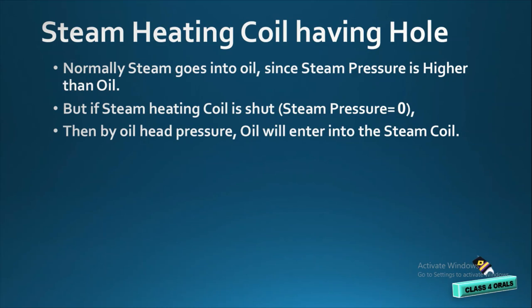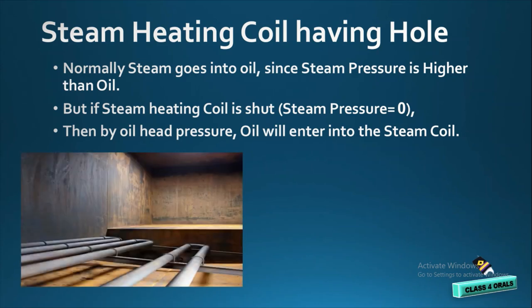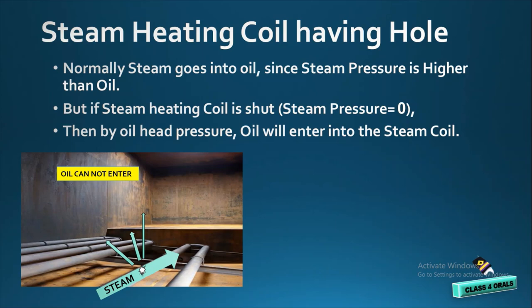One of the reasons of oil getting into the hot well is the steam heating coil having a hole. Let us suppose this is the steam heating coil and it is having a hole in it. Now, the steam pressure is higher than the oil pressure. Because of this hole and steam's higher pressure, the steam can easily enter into the oil side, and oil cannot enter into the steam pipeline.